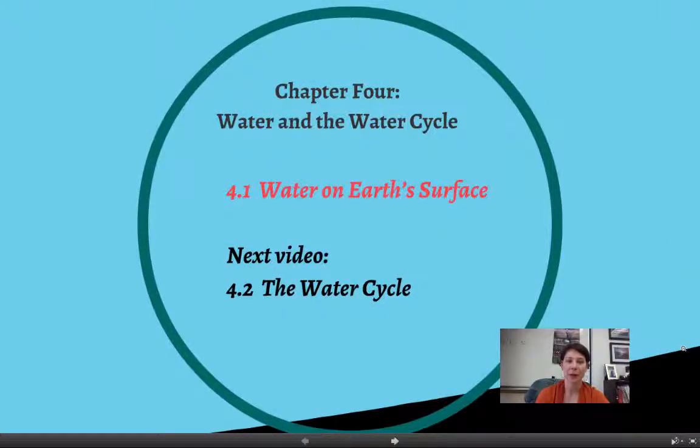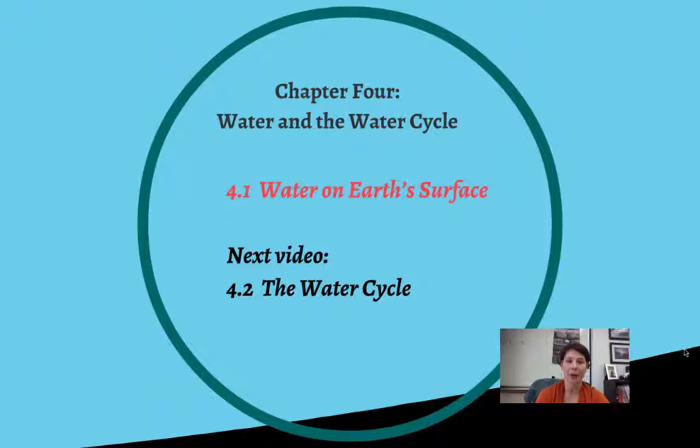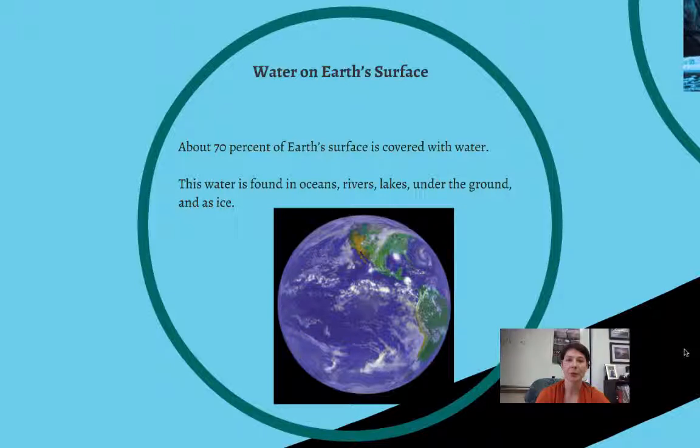Hi, welcome to chapter 4. We're going to talk today about water on Earth's surface, and in the next video we'll talk about the water cycle. So water is really an essential element to Earth, and about 70% of Earth's surface is covered with water.